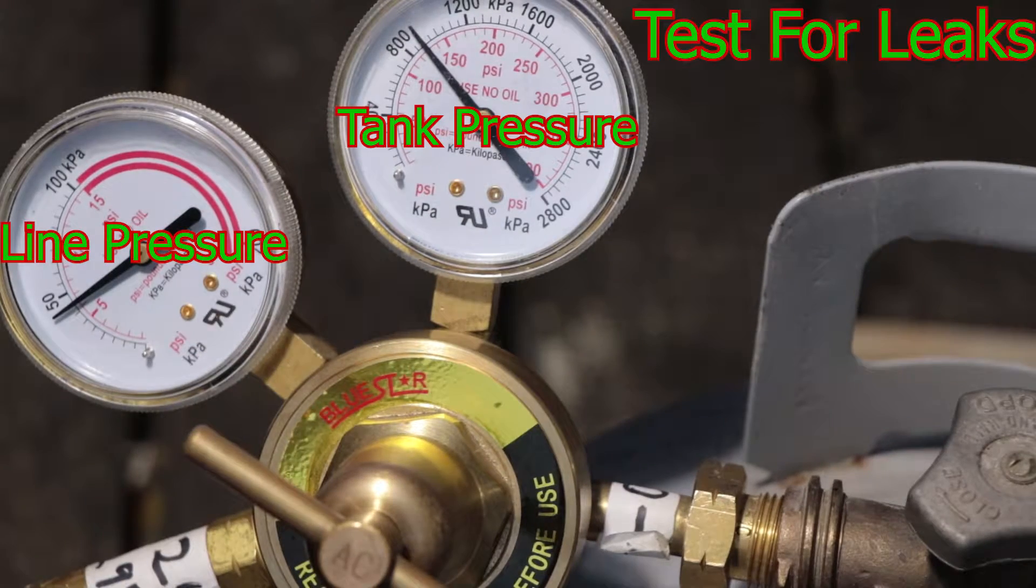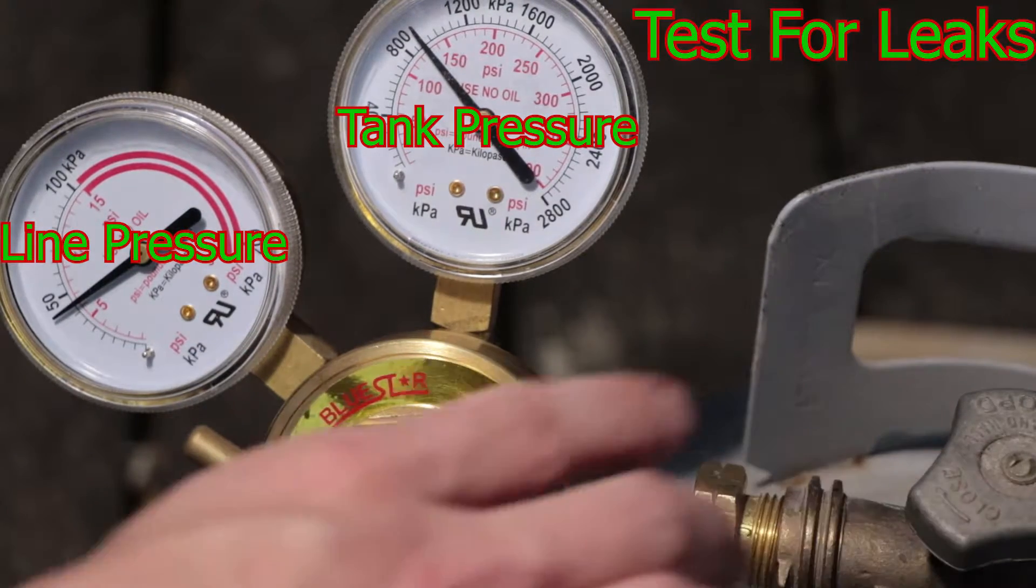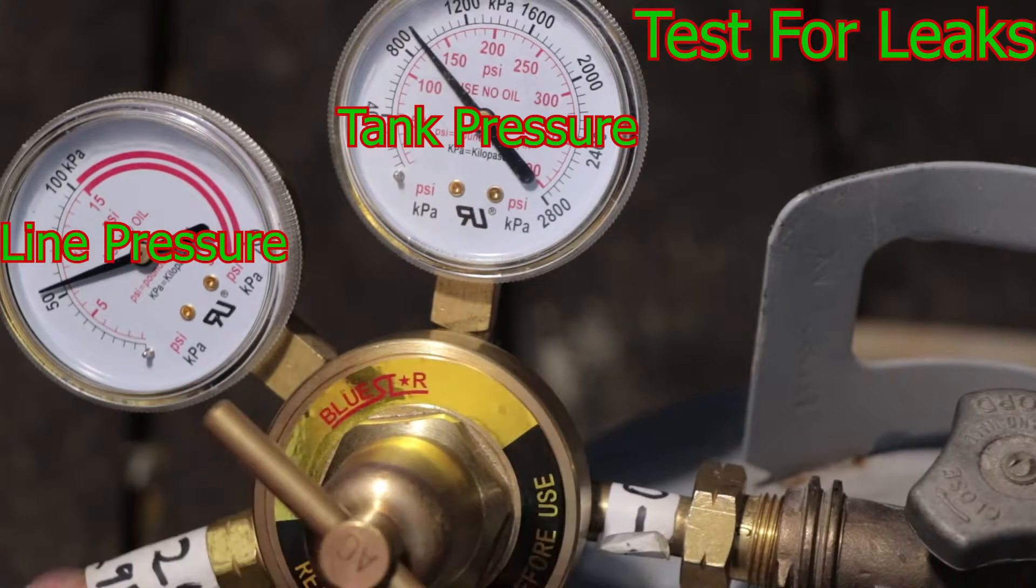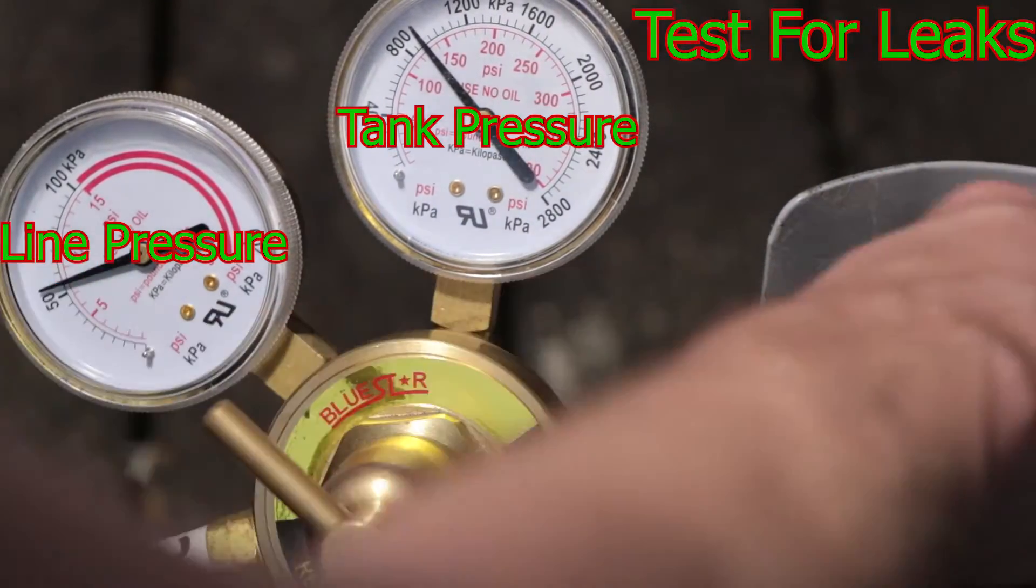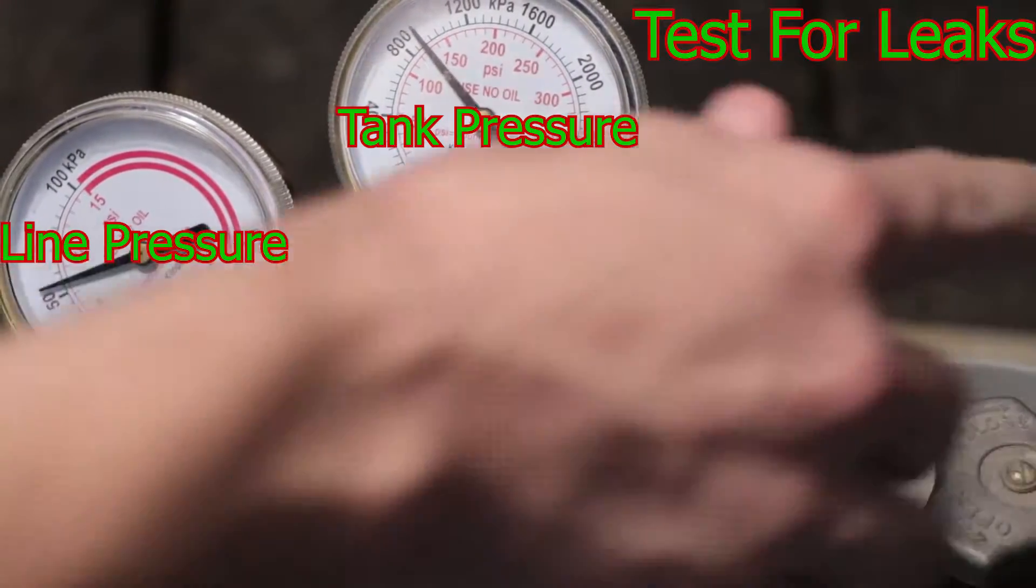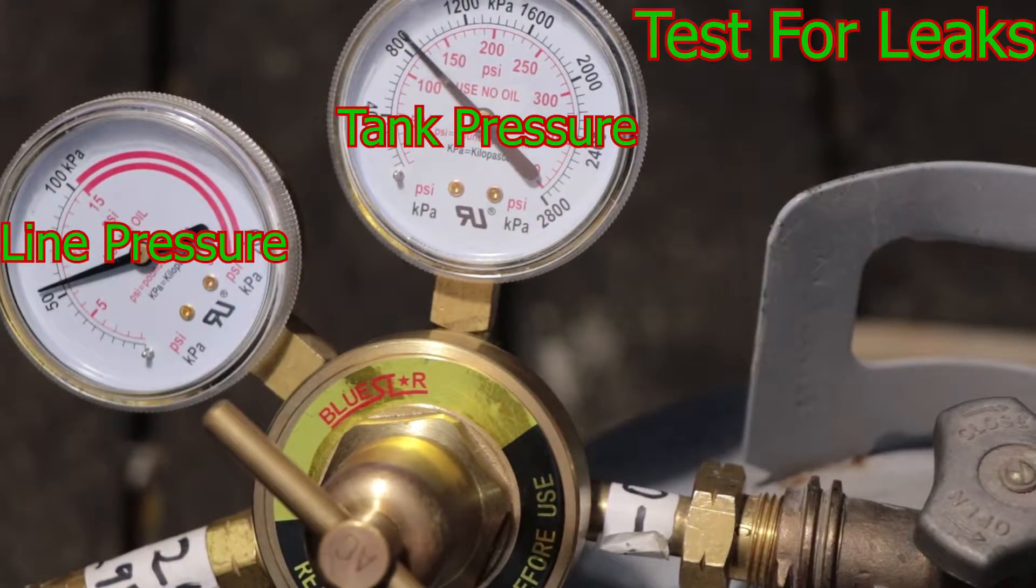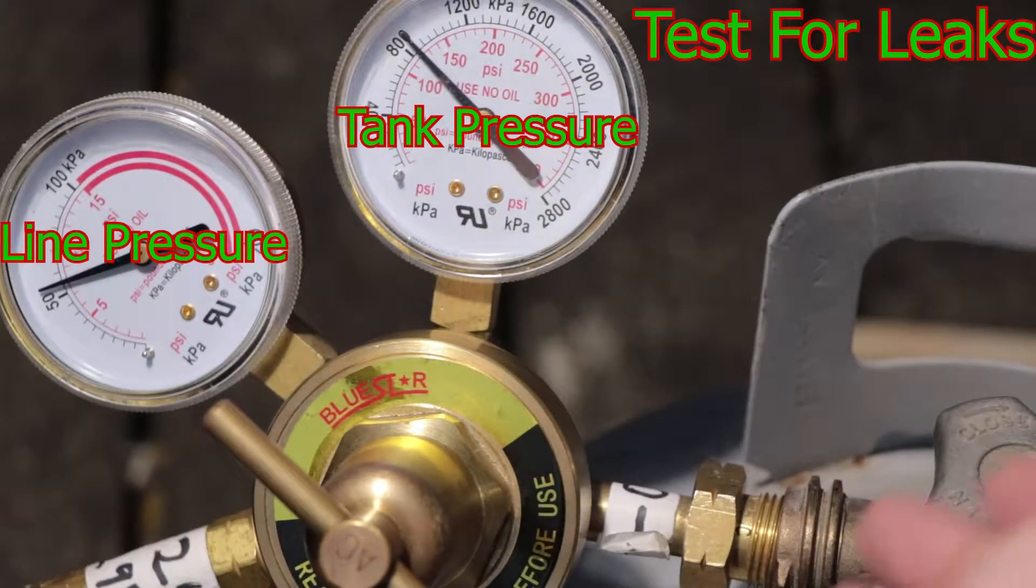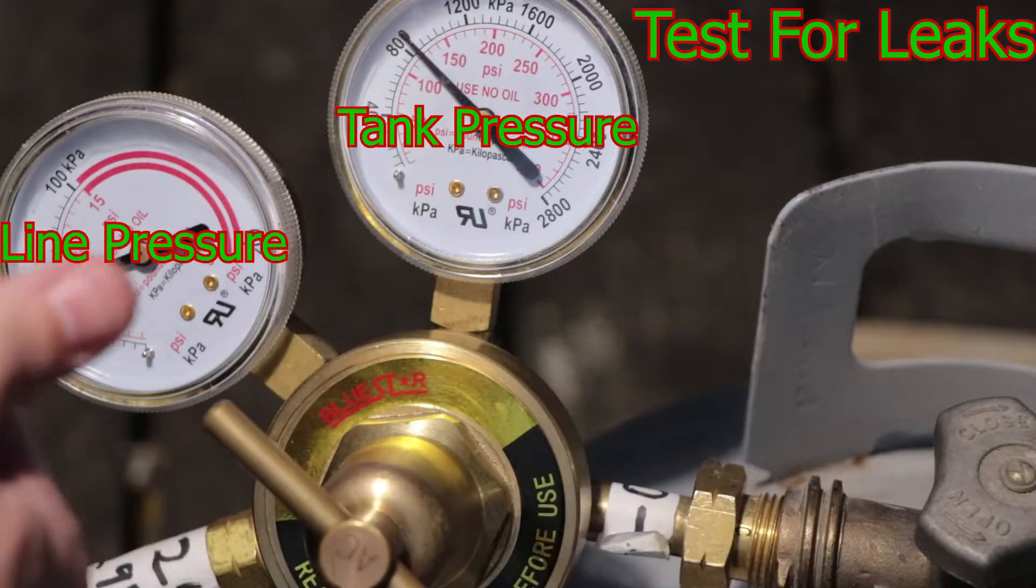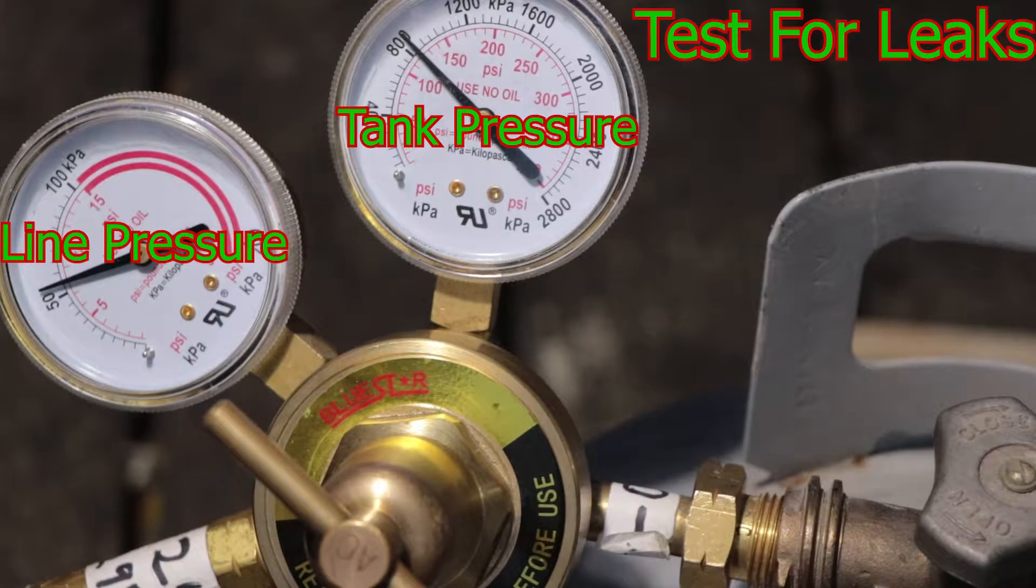And one quick way to test for leaks is to have your tank on, turn your regulator on. I'm going to turn it up to about eight here. Then turn off the tank. Now if the tank is closed, if there is a leak it'll show real quickly on these dials and there's no new propane coming into the lines. We'll see how long it can hold its pressure.